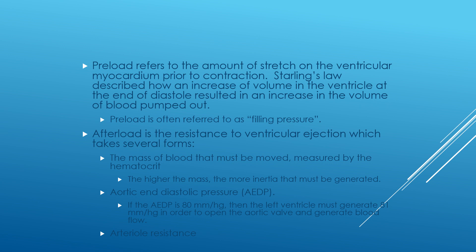After-load is the resistance to ventricular ejection, which takes several forms. The mass of the blood that must be moved, measured by the hematocrit — the higher the mass, the more inertia that must be generated. The aortic end-diastolic pressure: if the aortic end-diastolic pressure is 80 mmHg, then the left ventricle must generate 81 mmHg in order to open the aortic valve and generate blood flow. We also need to consider the arterial resistance.